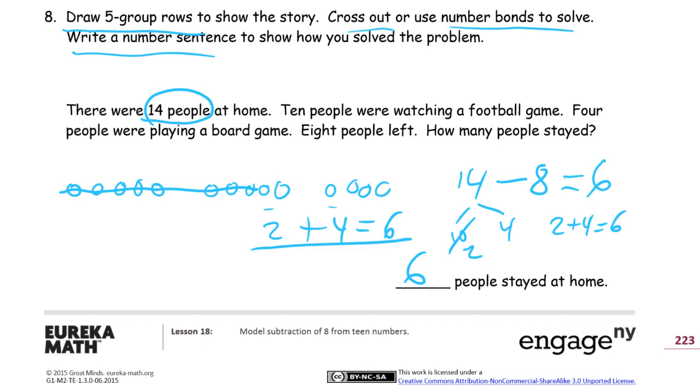And that's everything you need. We had to cross out or use number bonds to solve. We did both of those. Write a number sentence. We did that. And we drew 5 group rows. So we did everything we were supposed to do. We're done. And we finished the answer statement too.